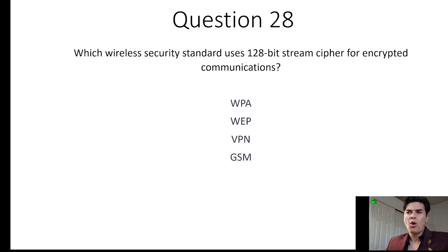Question 28. Which wireless security standard uses a 128-bit stream cipher for encrypted communications? The answer is WPA, which replaced WEP, and took care of some of those vulnerabilities that they initially had there. Now, we did talk about WEP and VPN earlier.